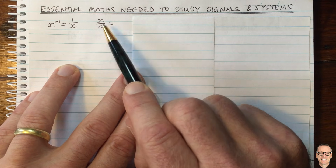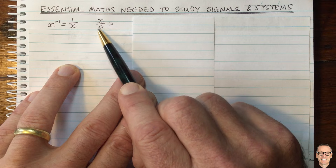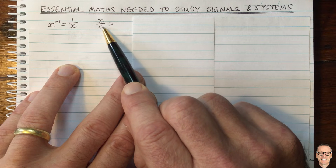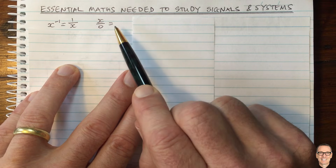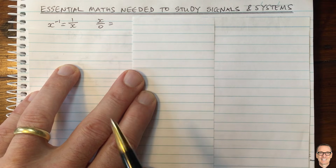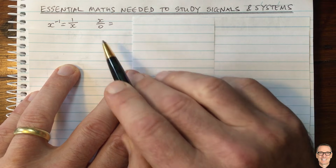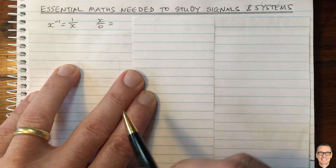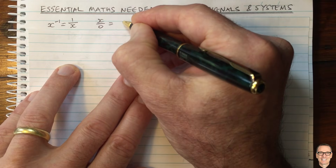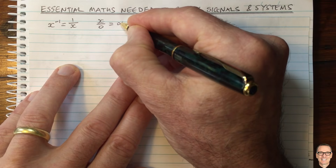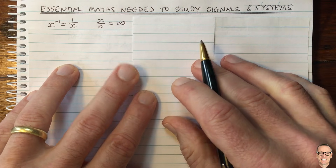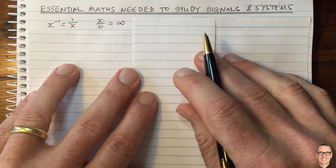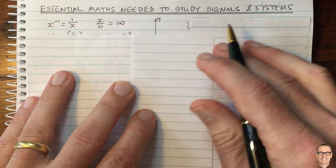Another important thing: if you divide by 0, that's the same as dividing by something very, very small, which means the answer is going to be very big. If it's exactly 0, then that equals infinity. That's going to be very important in signals and systems.